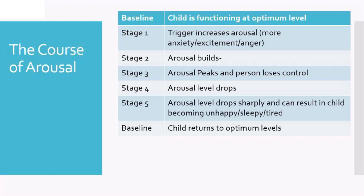In stage four, the arousal level drops — the firework has exploded and is beginning to fall back down towards Earth. This is a stage where, if we're not careful, we might miss it fireworking again — miss that there's a second flare. Another stressor coming in can cause the arousal to peak again. For example, using too much language when the child is beginning to come back down could cause them to go back up. So this is the stage where we need to be quite careful.